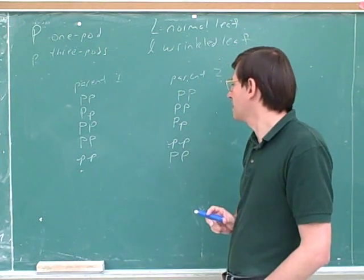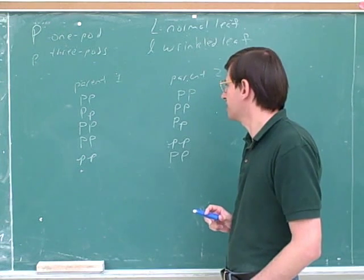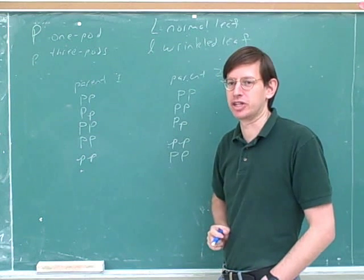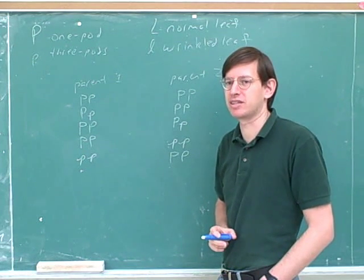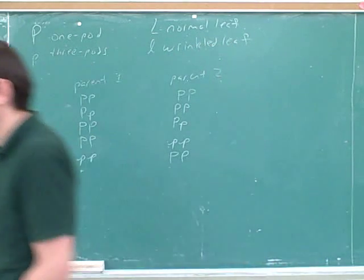Okay. So basically, one of the parents has to be homozygous dominant and then the other parent can be anything. To cut a long story short, one of the parents has to be homozygous dominant and then the other parent could be anything. Right. Okay. That makes sense.